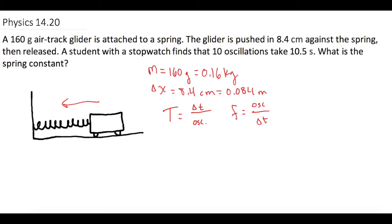Frequency is equal to the number of oscillations, which they say is 10 oscillations in 10.5 seconds, and that is going to give us a frequency of 0.9524 hertz.